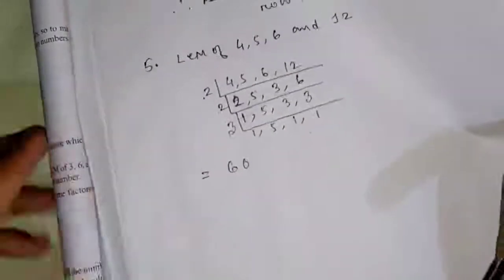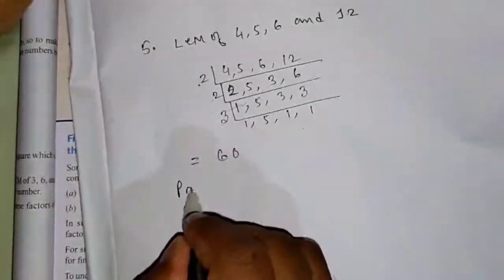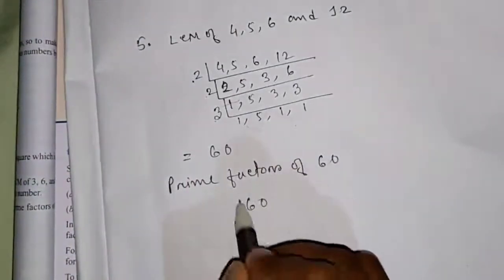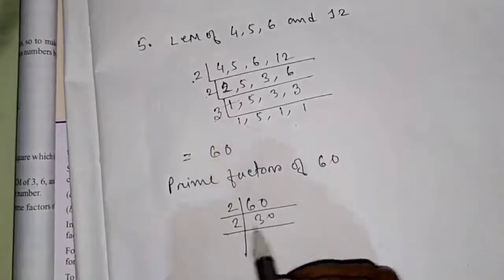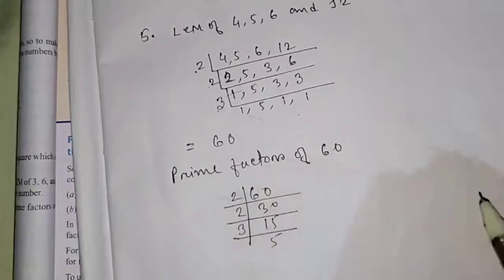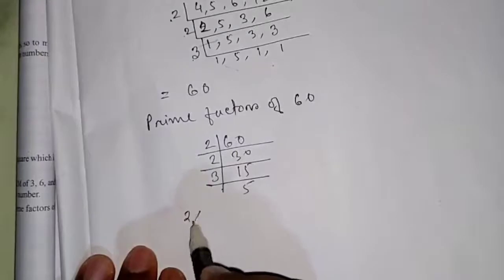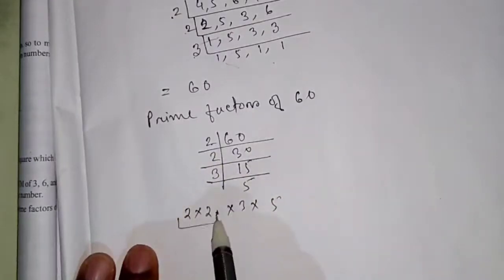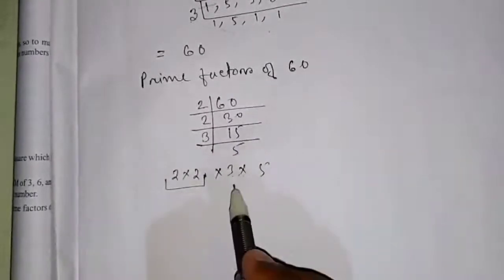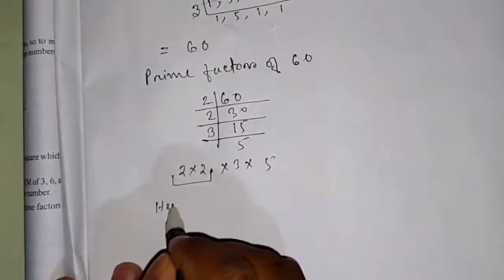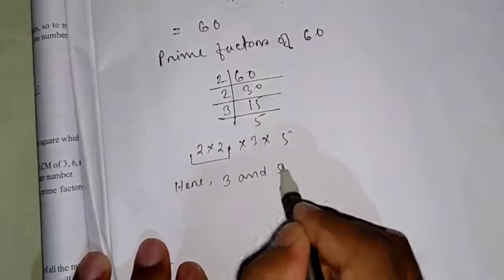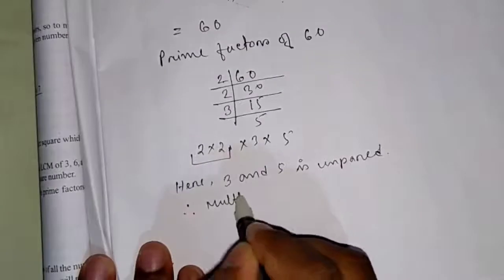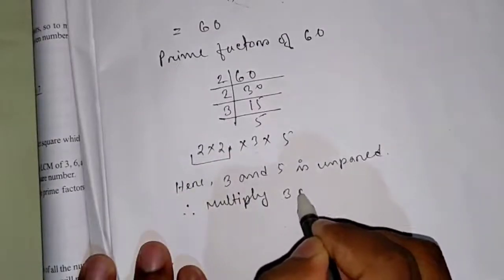Now we have to find the prime factors of 60. Prime factorization of 60: 60 = 2×30, 2×15, 3×5. So prime factors are 2×2×3×5. As you can see, 2 is a pair, but 3 and 5 are not paired. So 3 and 5 are unpaired. Therefore multiply 3 and 5 together.